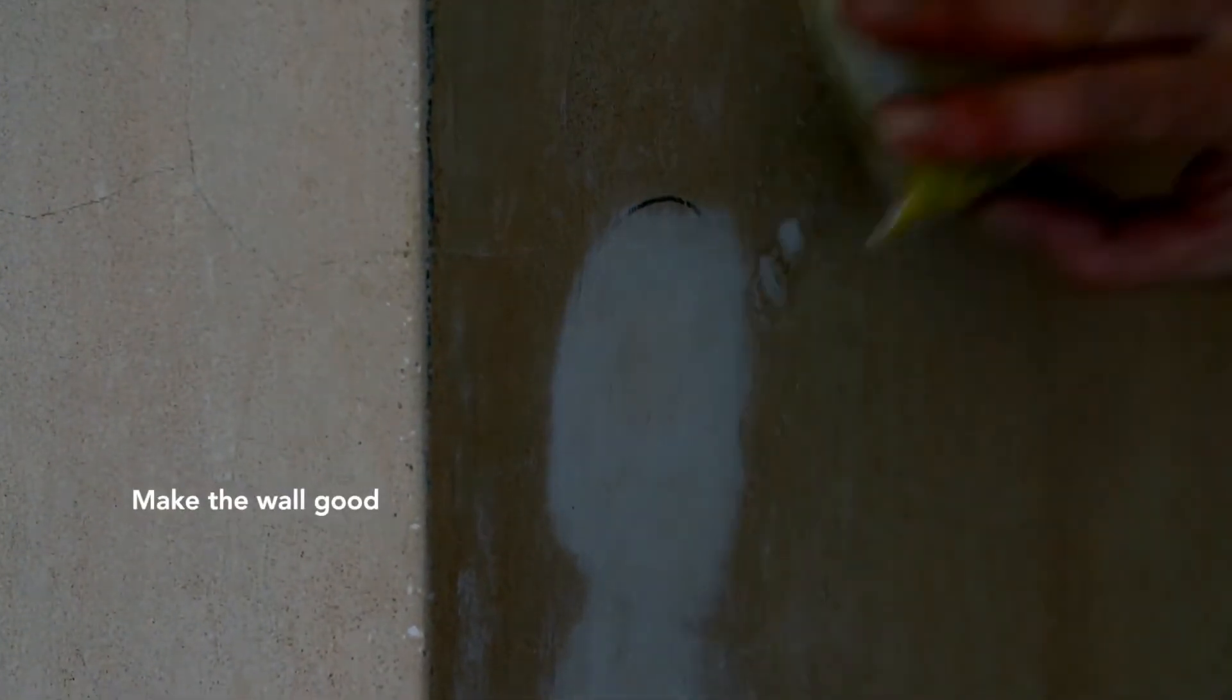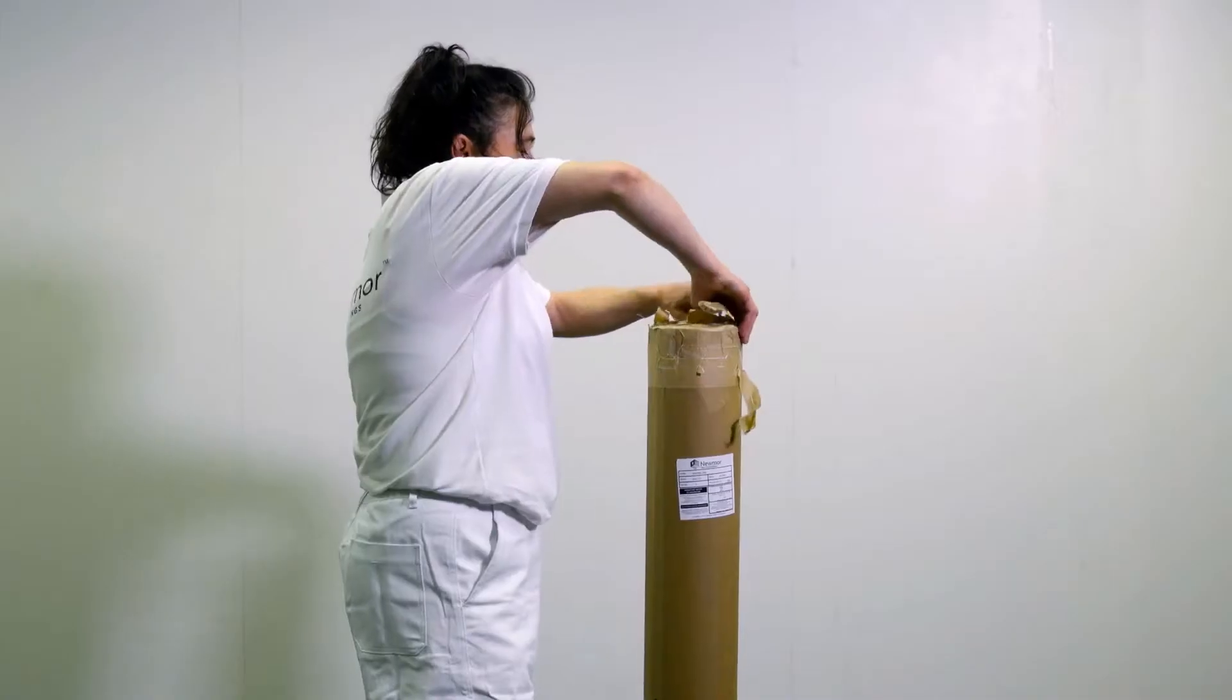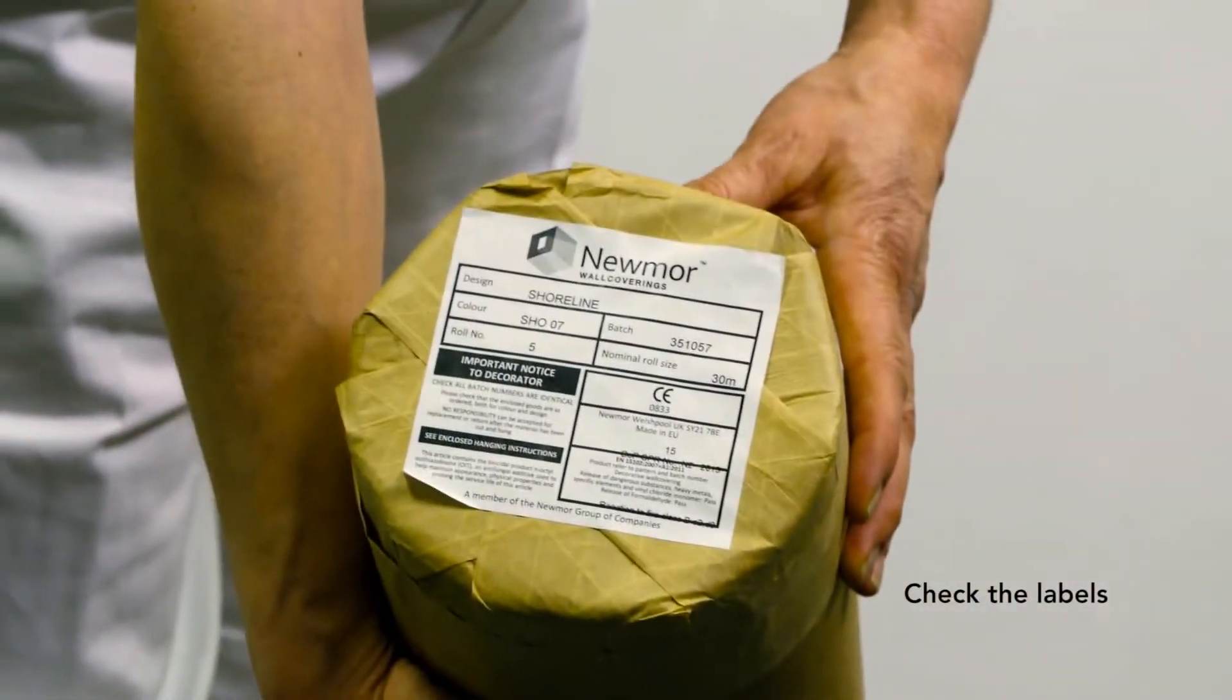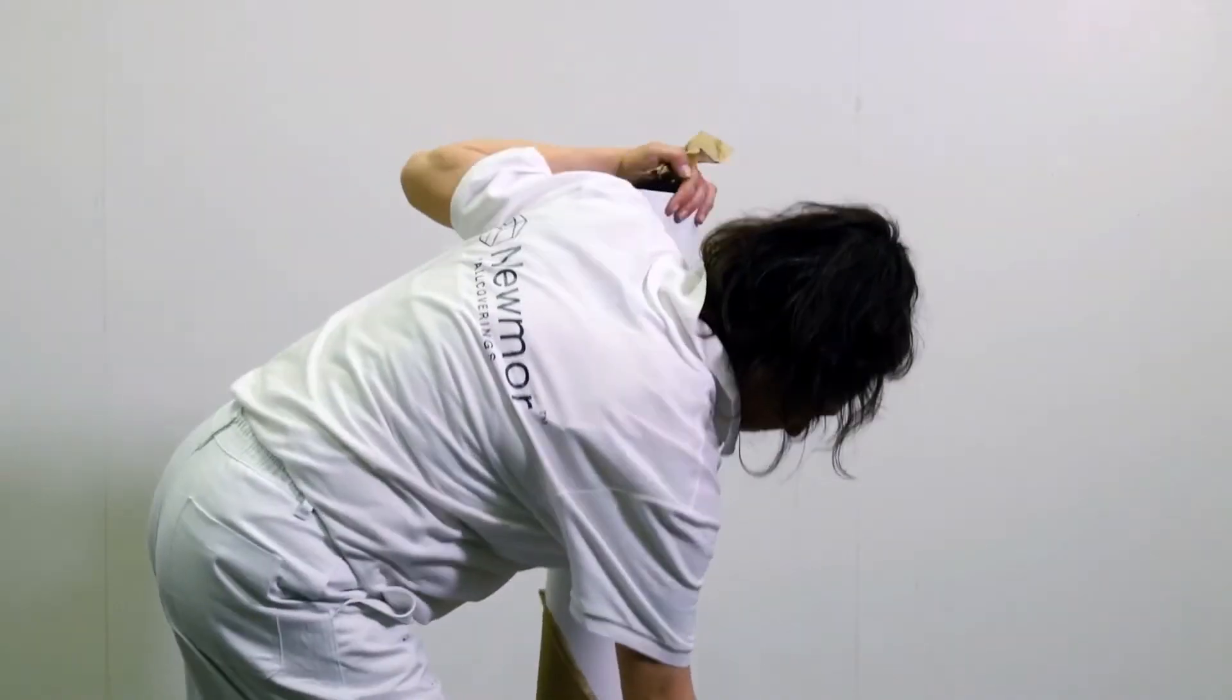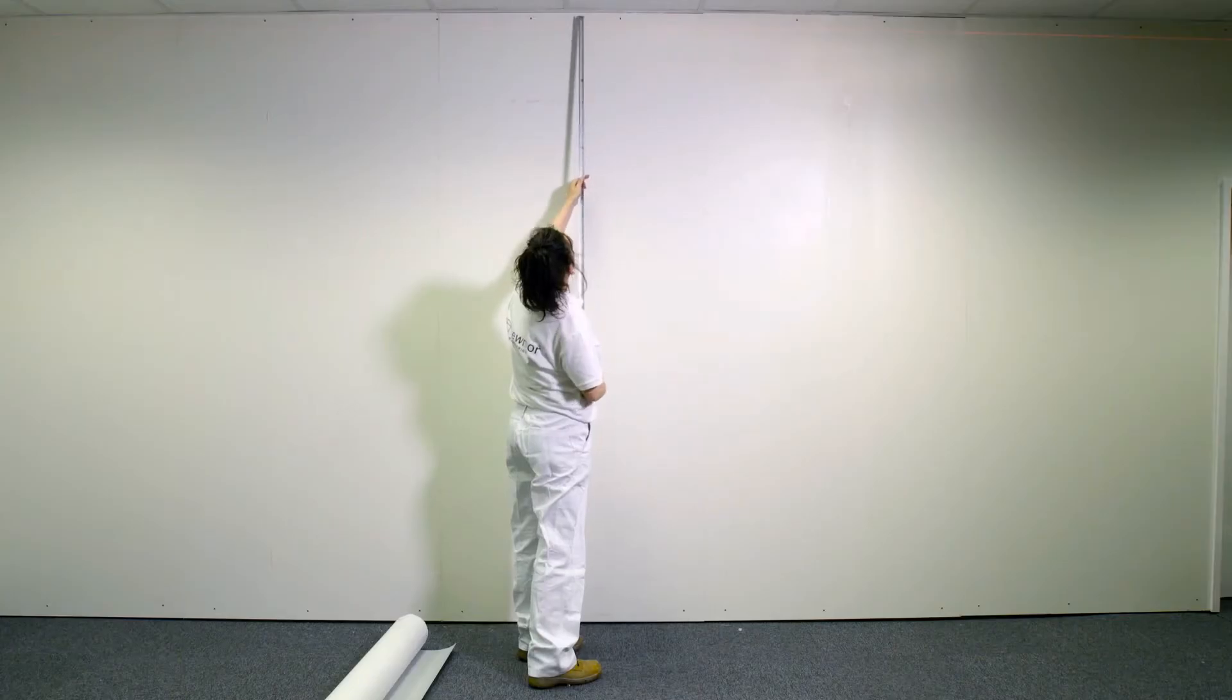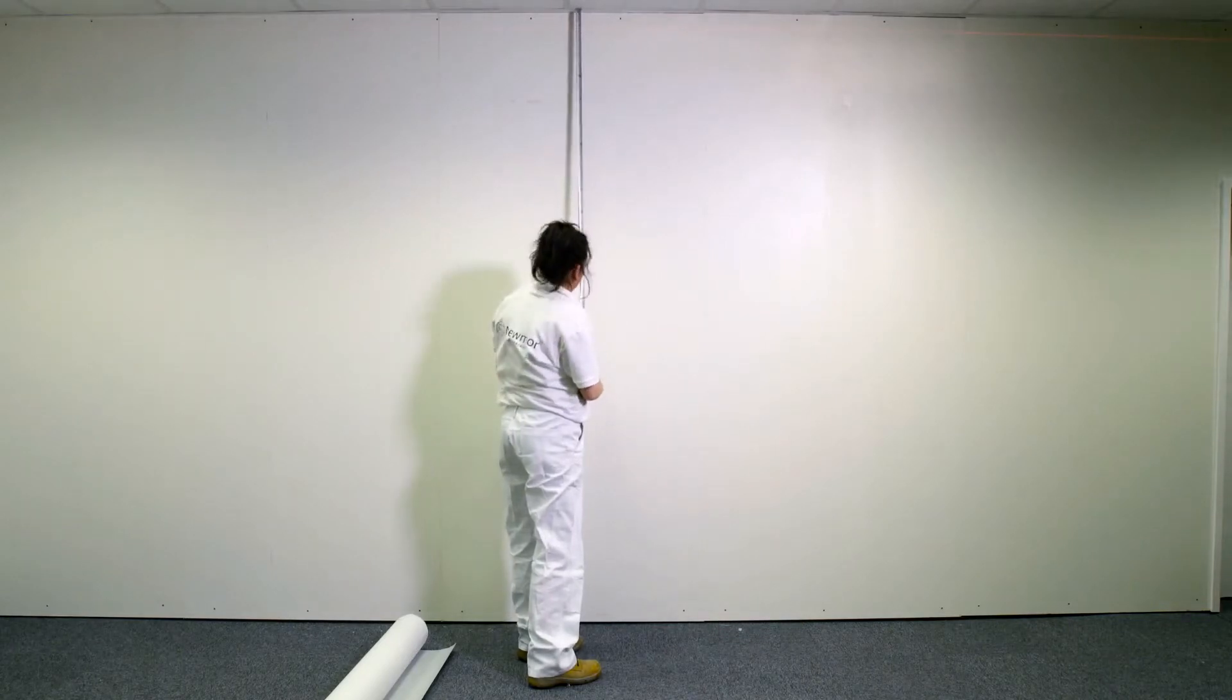Fill any holes and make the wall good. We recommend that you use primer on all surfaces. Check the labels on the packaging to ensure the wall coverings are specified. Hanging instructions are also included in every roll.